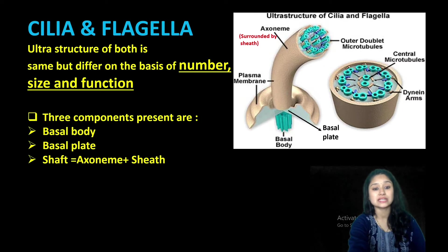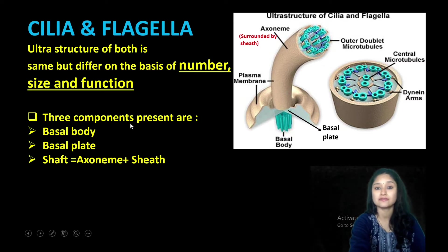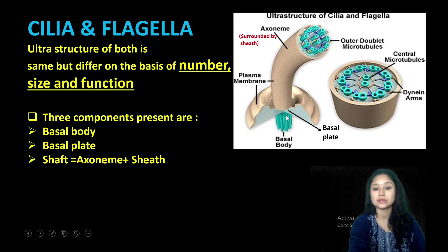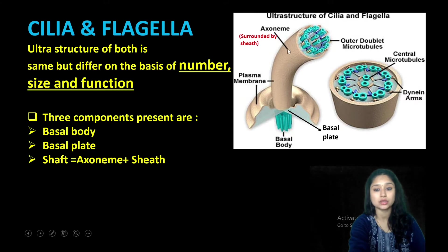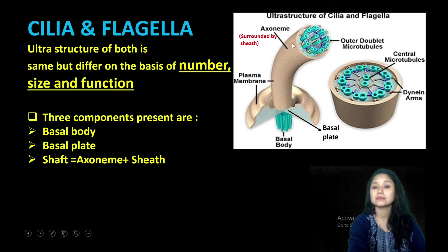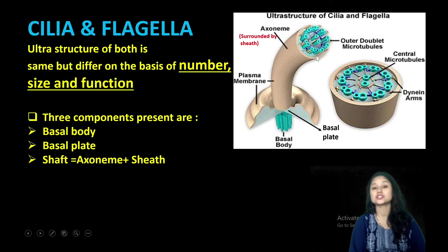Three important components present in the ultra structure of cilia and flagella: these are basal body, just above the basal body present rahega basal plate, and the third one is shaft. Shaft mein jo aapko nazar aa raha hai structure — that is exoneme. Aur yeh exoneme jo hai, it is surrounded by a sheath that is an extension of plasma membrane. Together this exoneme and sheath form shaft. Hum is shaft ka T.S. study karte hain and understand the arrangement of microtubule in case of cilia and flagella.